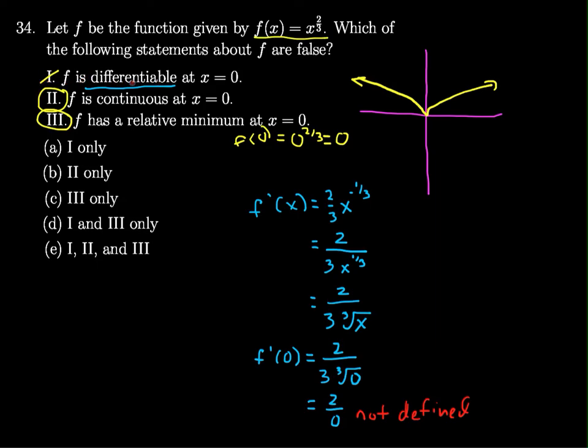So we can see that f is not differentiable. And before we answer, we can see we're looking for which ones are false. So our answer is going to be i, or a, because i is the only one of these that is false.